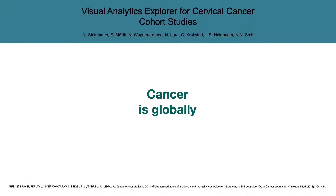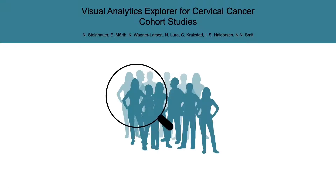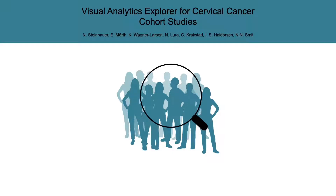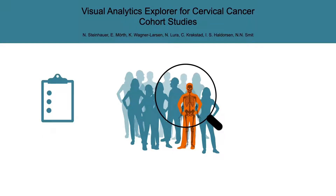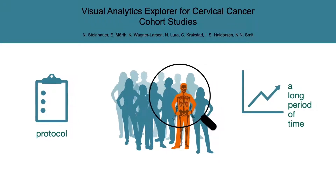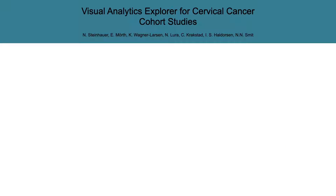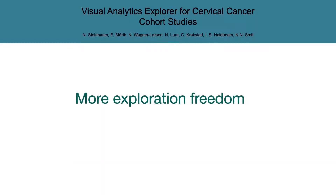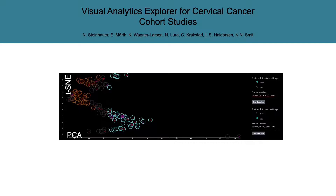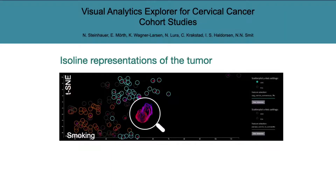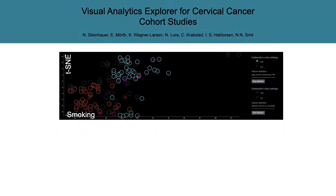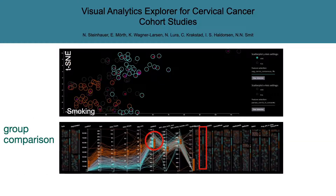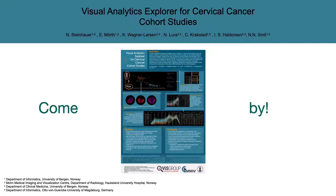Cancer is globally the second leading cause of death. Visual cohort analysis tools can support developing targeted treatment strategies in cancer. However, the data of cervical cancer patients are gathered over a long period of time and only standardized for the last few years. Thus, building upon the cohort analysis tool by MERT and colleagues, our approach provides users more exploration freedom to find complex relations by enabling double- or single-axis dimensionality reduction combined with multiple linked views and group comparison extensions. To see this combination in action, come by our chat room.